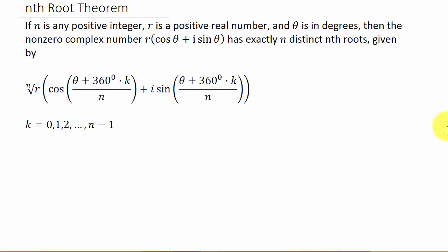Alright, so in this video we're going to look at the nth root theorem. If n is any positive integer, r is a positive real number, and theta is in degrees, then the non-zero complex number r cosine theta plus i sine theta has exactly n distinct nth roots given by this formula.